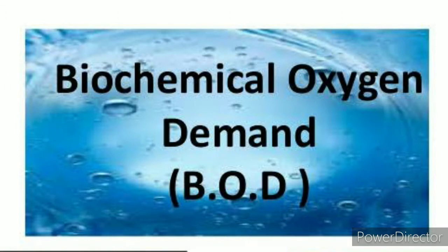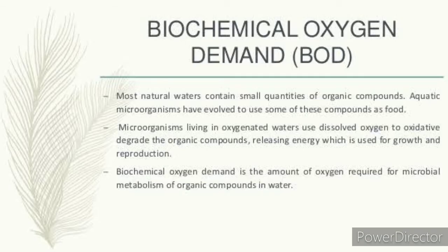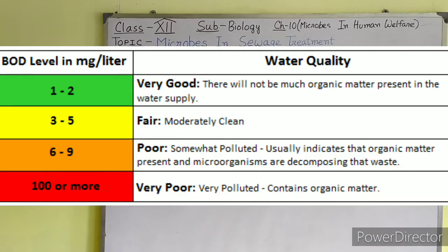This significantly reduces the BOD — Biological Oxygen Demand — of the effluent. BOD refers to the amount of oxygen that would be consumed if all the organic matter in one liter of water were oxidized by bacteria. The BOD test measures the rate of uptake of oxygen by microorganisms in a sample of water, and thus indirectly, BOD is a measure of the organic matter present in the water. The greater the BOD of wastewater, the more is its polluting potential.